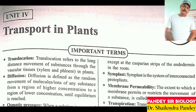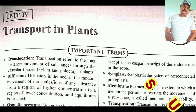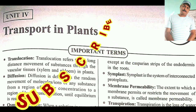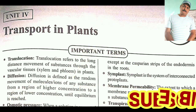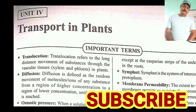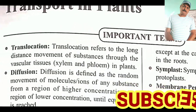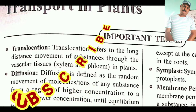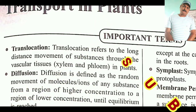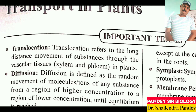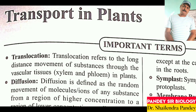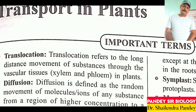Hello subscribers and dear students. This is Unit 4, Transport in Plants, Chapter 11 for Class 11. In this chapter, we will understand what is translocation. Translocation refers to the long distance movement of substance through the vascular tissue xylem and phloem in plants — the flow of a substance from one site to another site in the plant body through xylem and phloem.